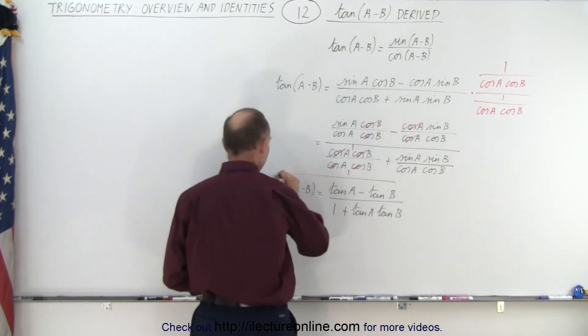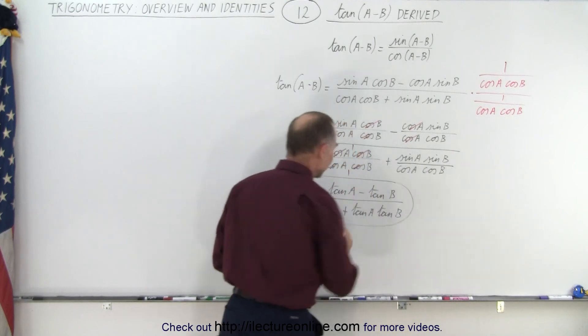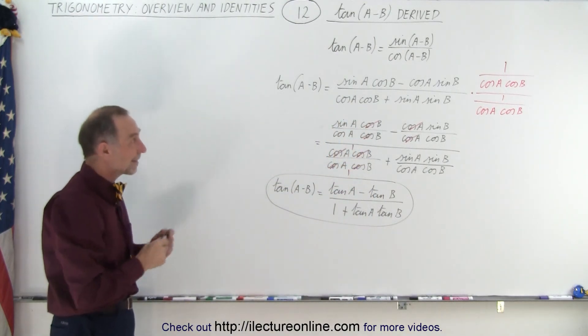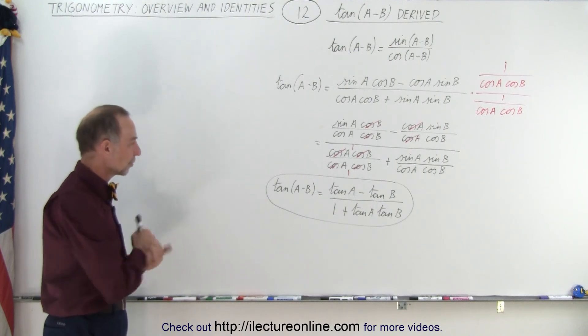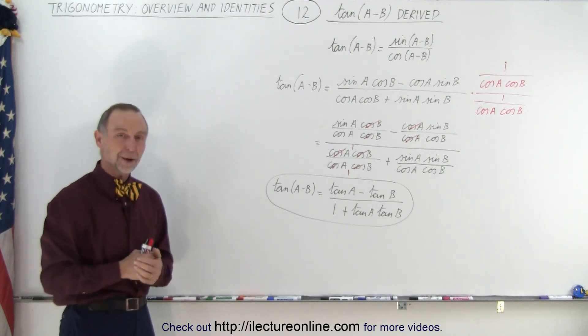And that's how we found the identity for the tangent of the difference of two angles. We use the exact same trick for both the tangent of the sum and the tangent of the difference of two angles. And that is how it's done.